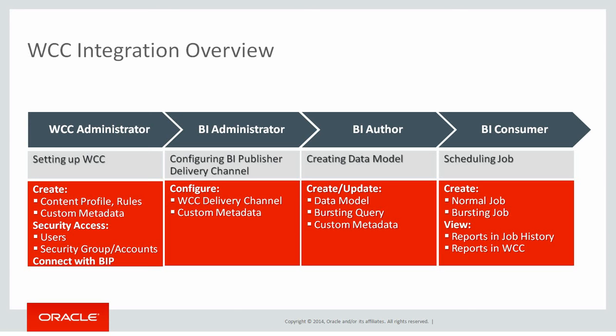Once the connection between the publisher and WCC is established, the report author can design the report and the data model to set up the custom metadata, bursting query, etc. When the report is ready, a user with a BI consumer role can submit a normal job or a bursting job. These jobs on successful completion will deliver the content to WCC. The BI consumer can view the job history and job history details, and based on authorization, the user can also log into the WCC server and view the document.